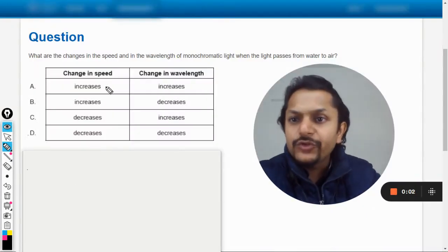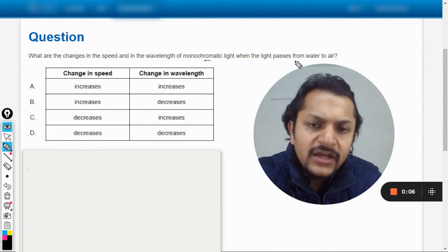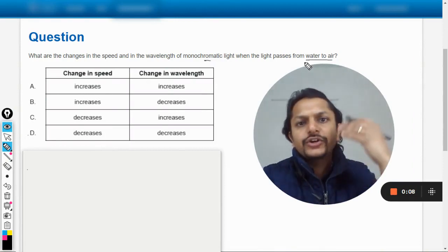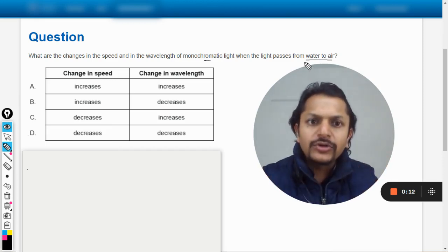Okay dear students, let us see what is this question. What are the changes in the speed and the wavelength of monochromatic light when light passes from water to air? So my dear students, let us talk about this thing.